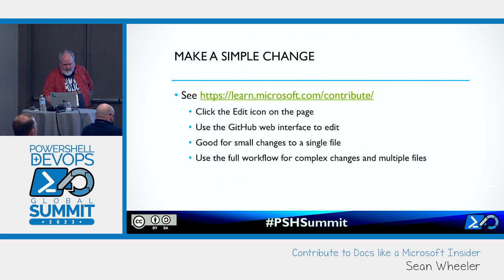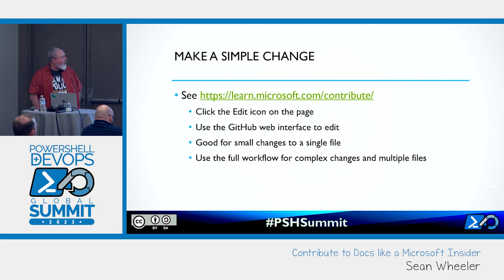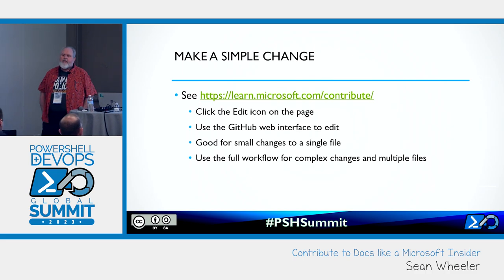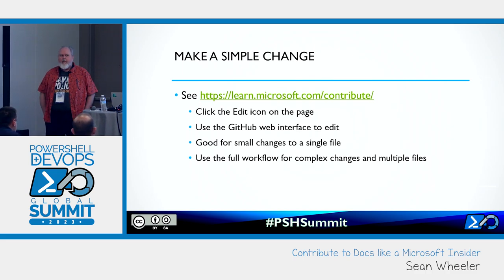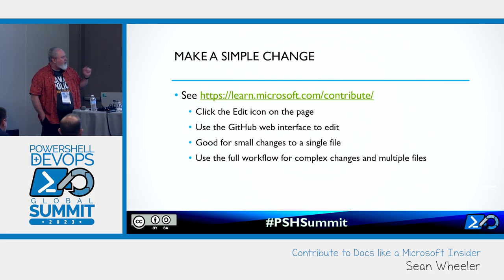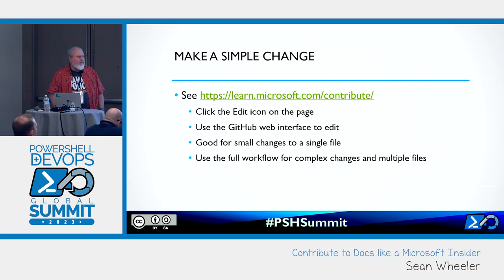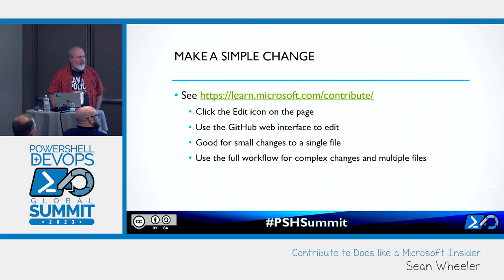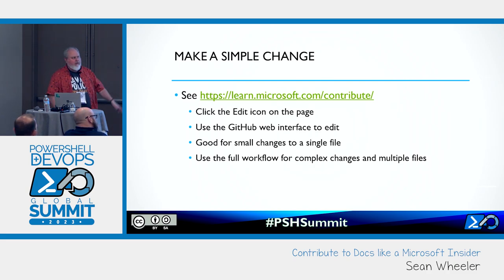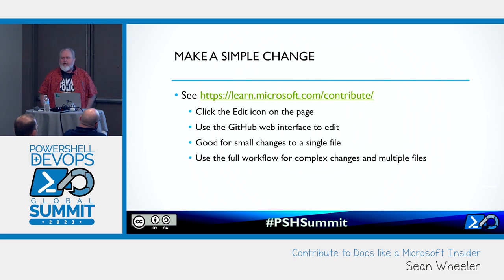Let's get into the ways to contribute. The easiest way — if you're reading the docs and you see a problem or a typo that needs fixing — you can choose the edit icon right at the top of the page. That takes you to the GitHub source for that page, and you can edit right in GitHub, make the changes, and it will create a working branch for you. It'll create a fork if you don't have one. You can submit it as a PR. That's great for small changes and single files, but if you're doing a large change across multiple files, you want to use the full Git workflow.